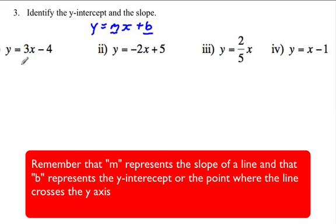So for the first equation, y equals 3x minus 4, our m is equal to 3 and our b is equal to negative 4. So that means our slope is 3 and our y-intercept is negative 4.